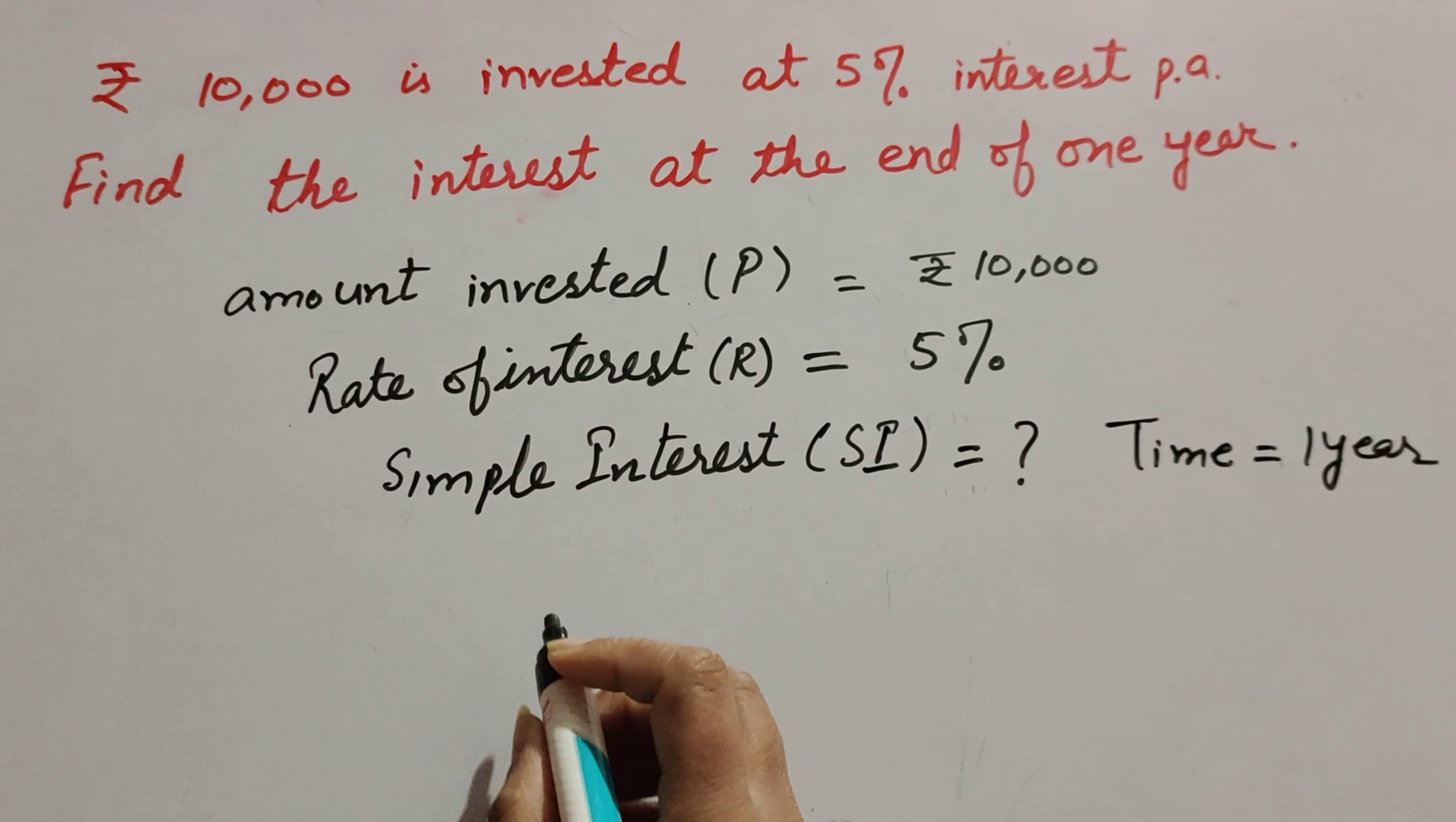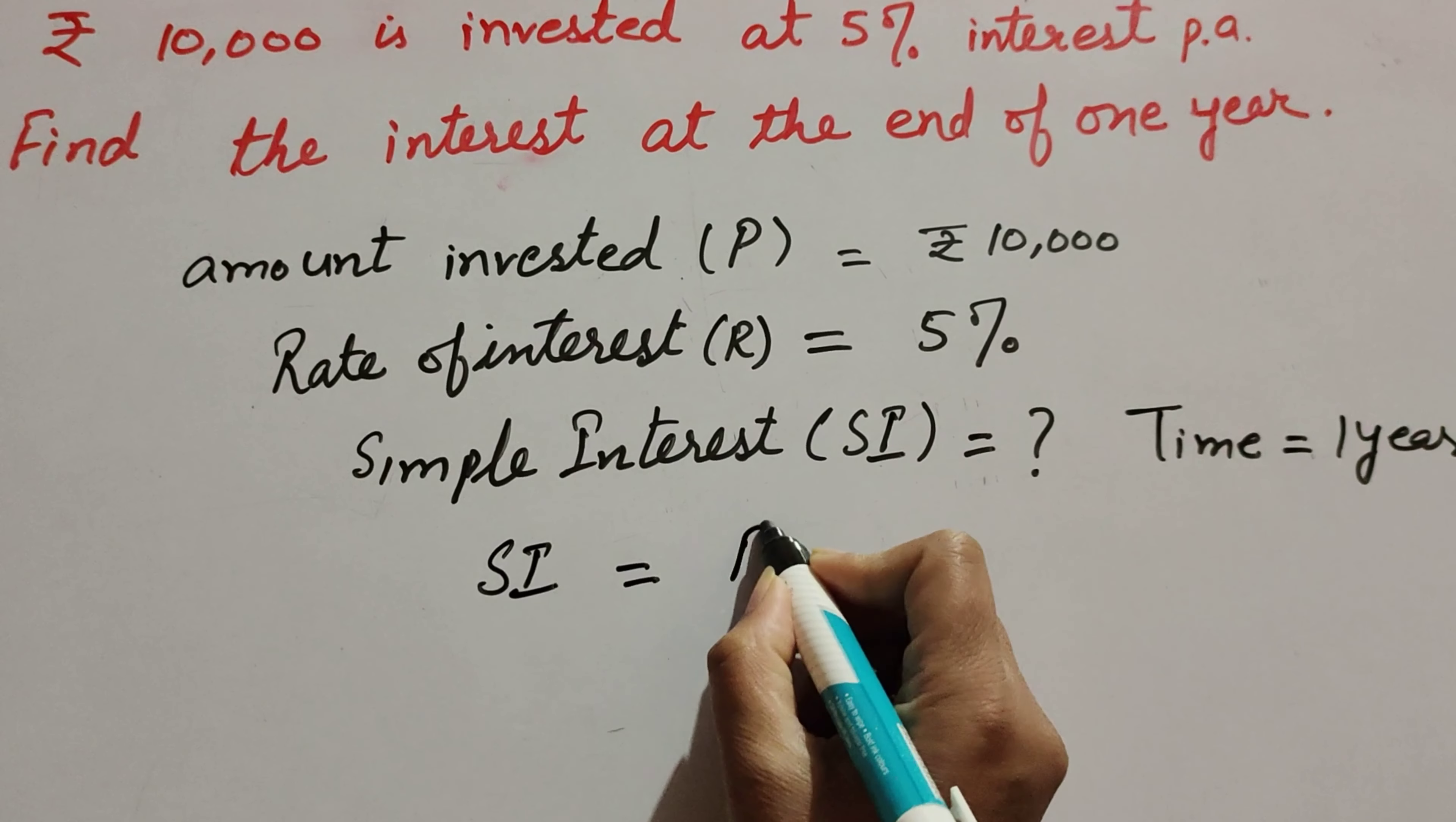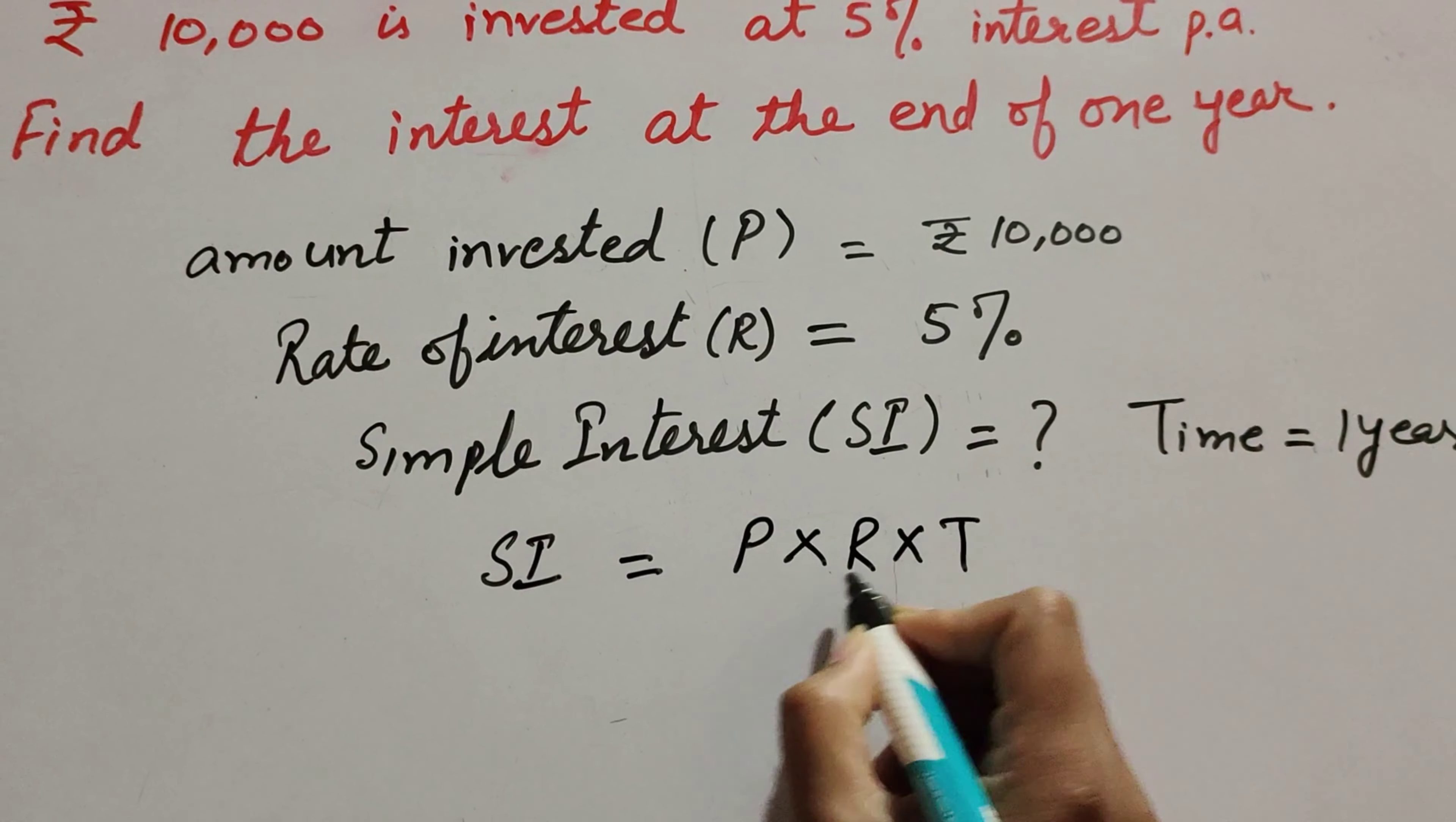We know the formula to find simple interest: SI equals P × R × T divided by 100.